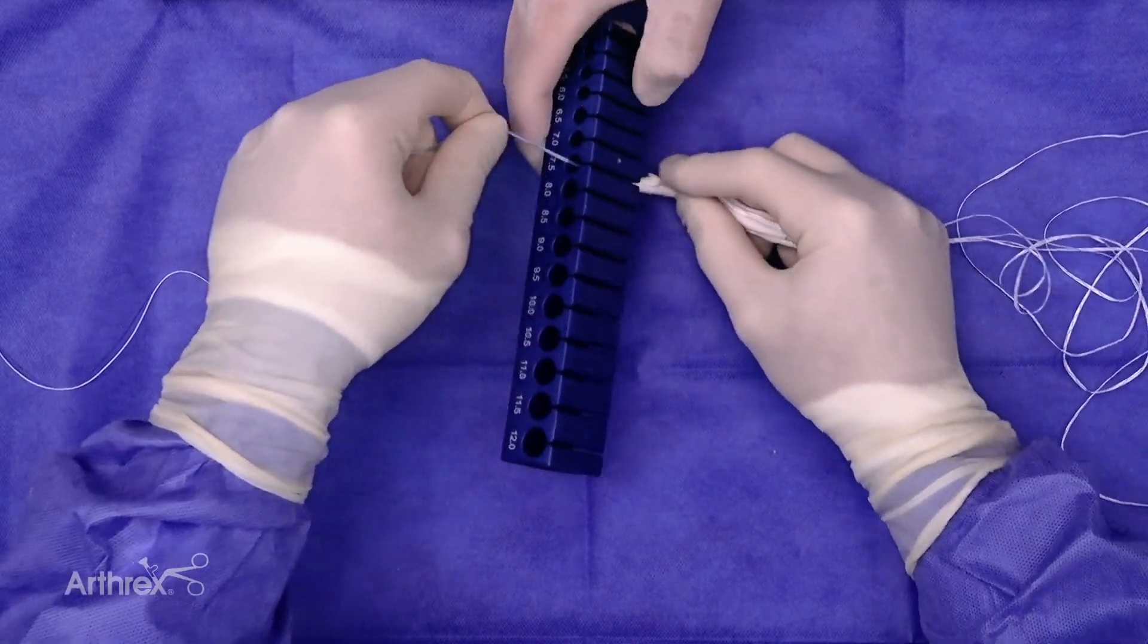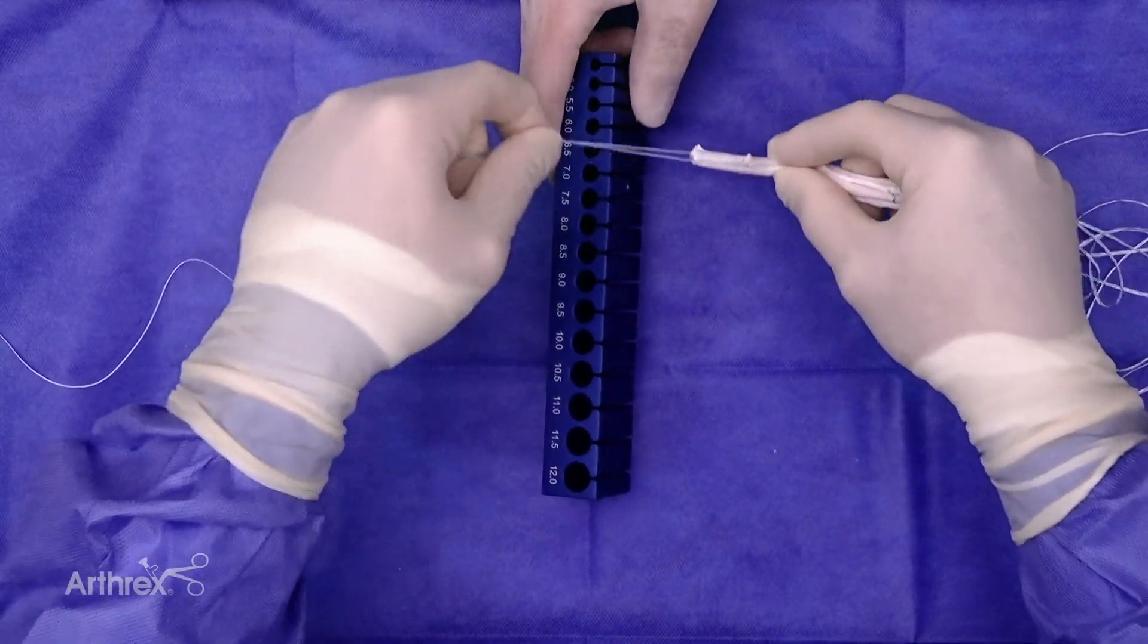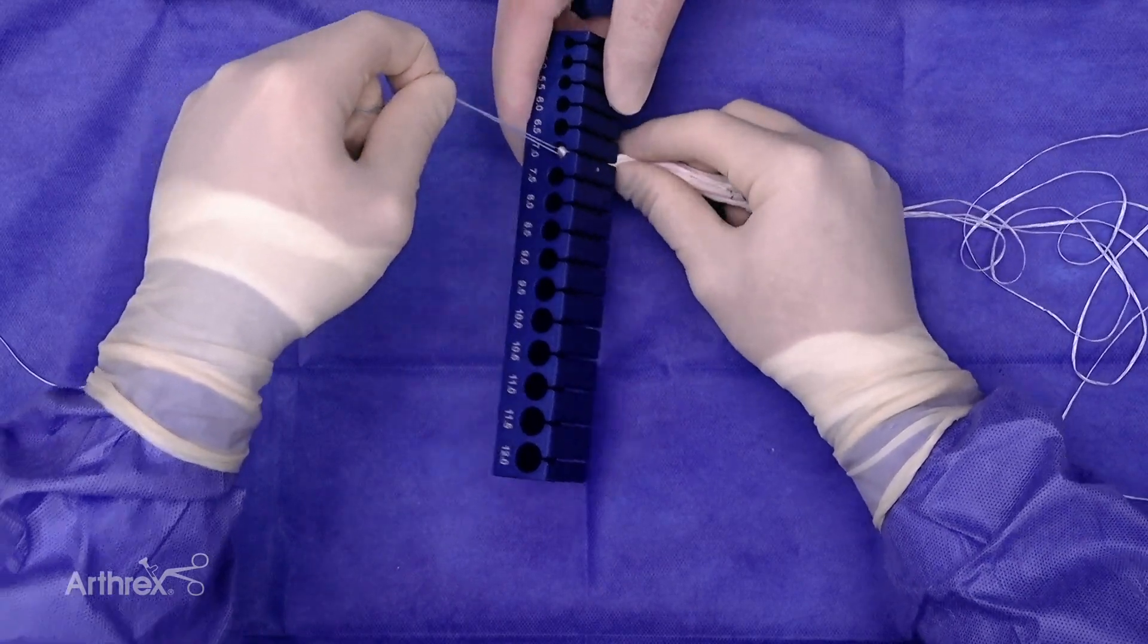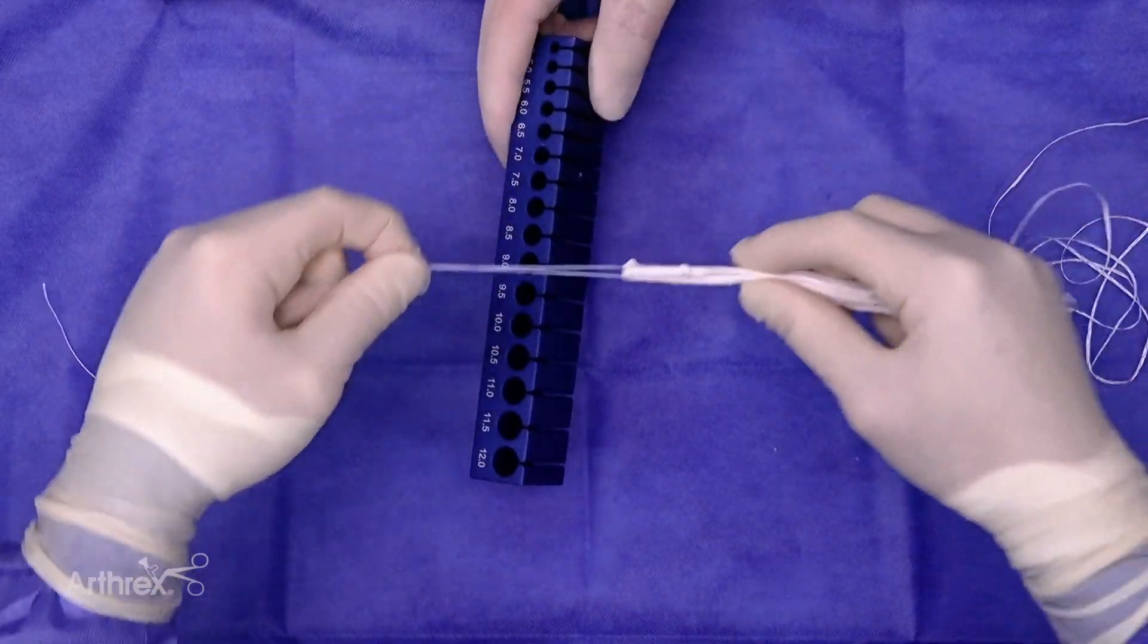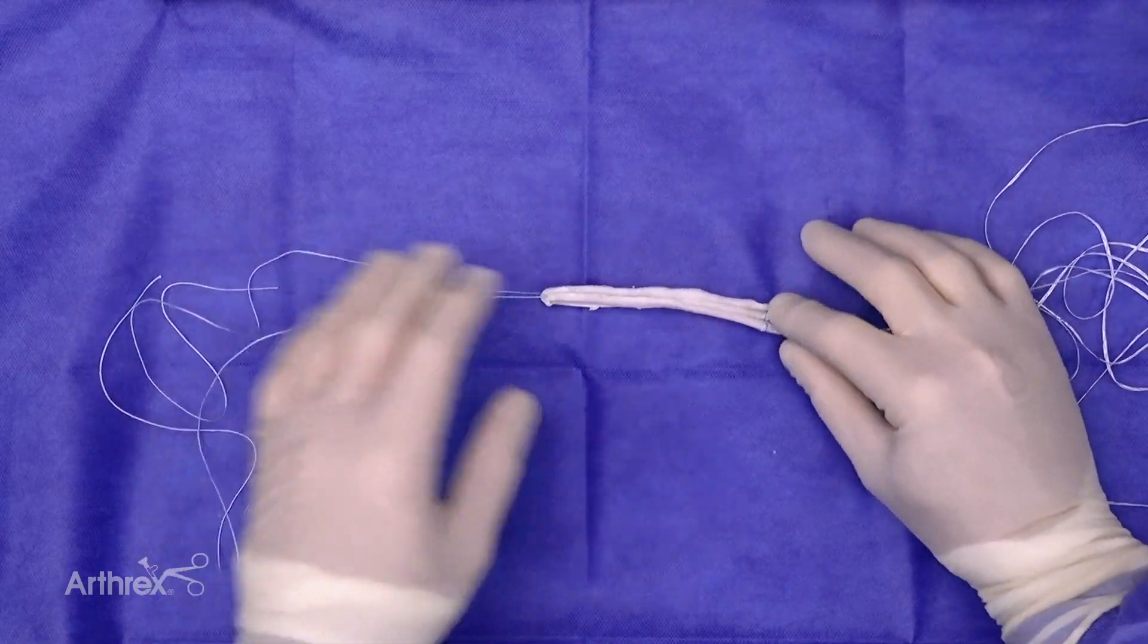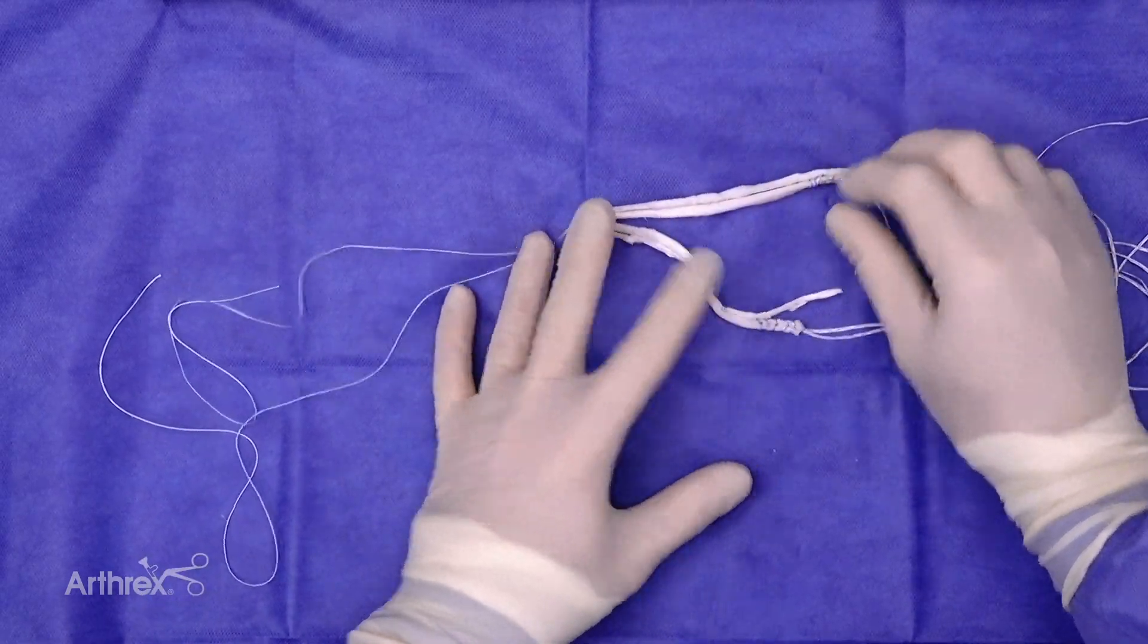An easy pass through 8, easy pass through 7.5, and starting to get tight at 7. So the re-rupture rates at that time, based on multiple prior studies, demonstrate high re-rupture rates.